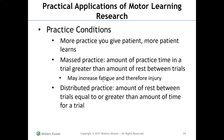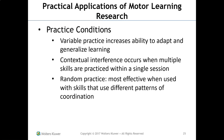The brain learns best with variety — not the same routine every time. Variable practice increases the ability to adapt and generalize learning, so change the practice up. Contextual interference occurs when multiple skills are practiced within a single session — don't just practice reaching for an hour; also do sit-to-stand and some walking. Random practice is most effective when using skills that involve different patterns of coordination. Like at the gym — don't always start with the bench press; change it up every four to six weeks. Same principle applies to motor learning.